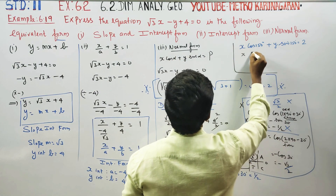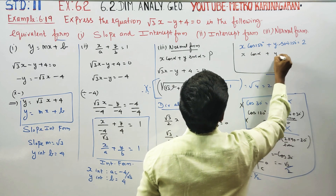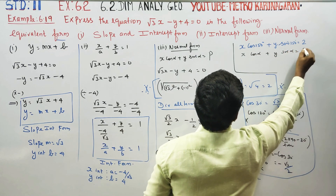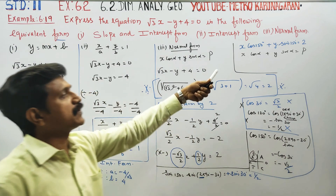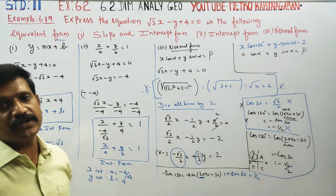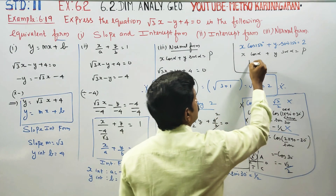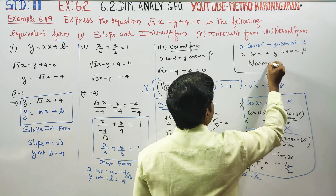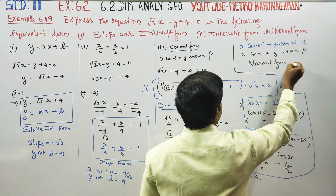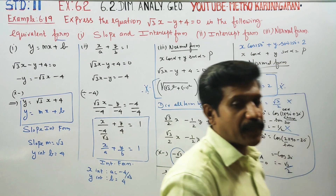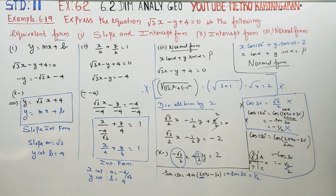So the equation in normal form is x cos alpha plus y sin alpha is equal to p. Here alpha is equal to 150 degrees and p is equal to 2.